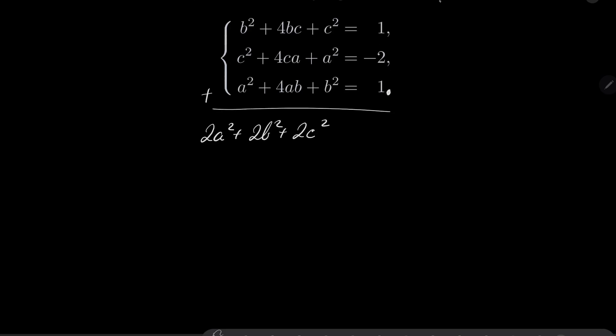we will have 2b², 2c², 4bc, 4ca, 4ab and on the right-hand side we'll have just 0.